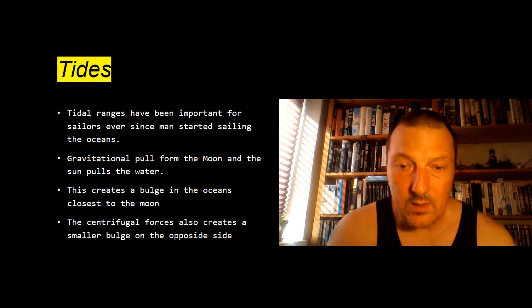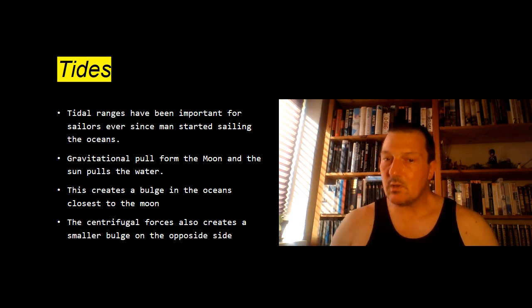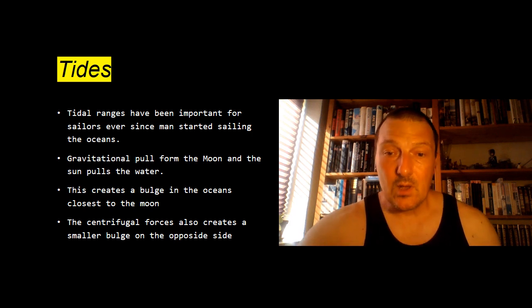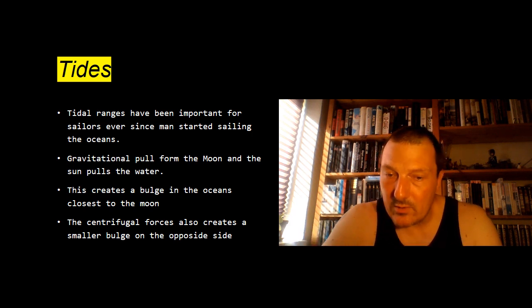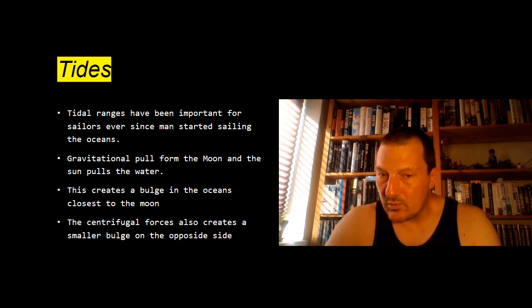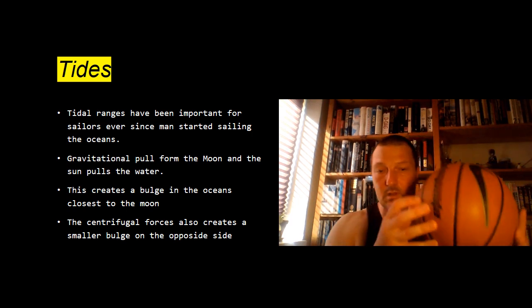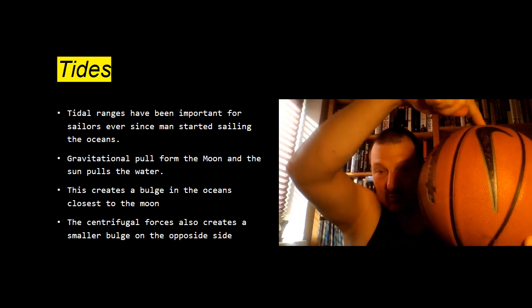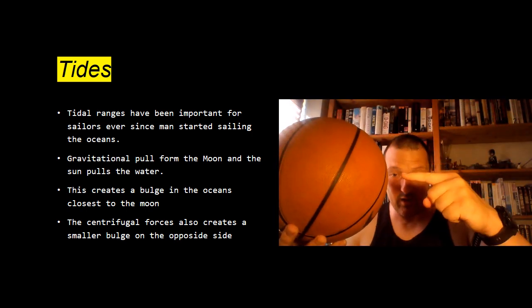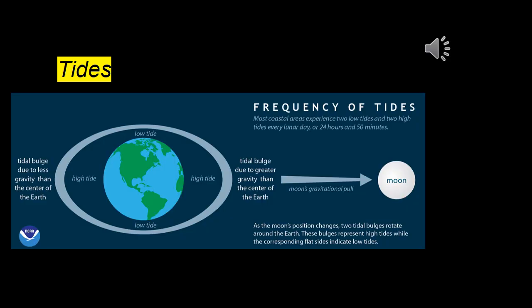So the other thing that has a huge influence is of course the Sun. The Sun is much further away and gravitational pull is affected a lot by distance. But since the mass of the Sun is also much greater, it still has a huge effect and it also pulls on the water in our oceans and create a bulge which is a high tide. And so if we have the high tide here, then we have the low tide here and here and we have another high tide on the other side.